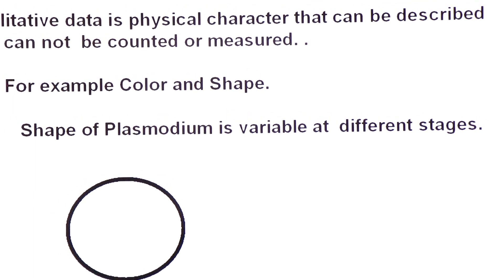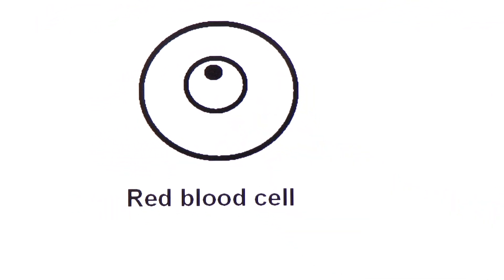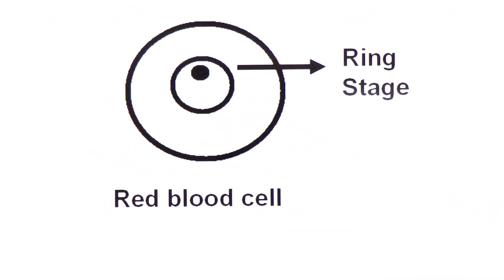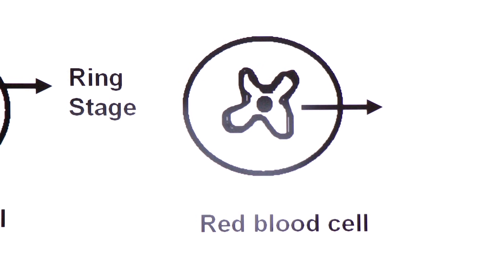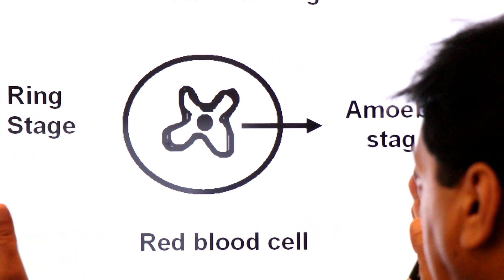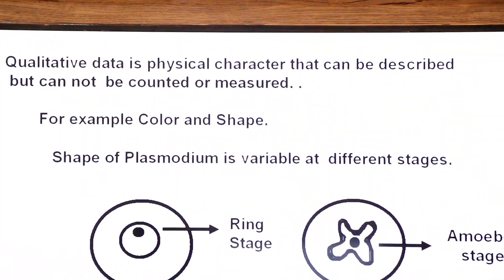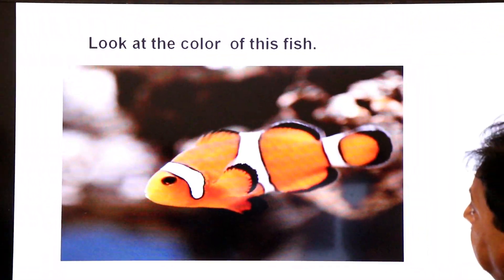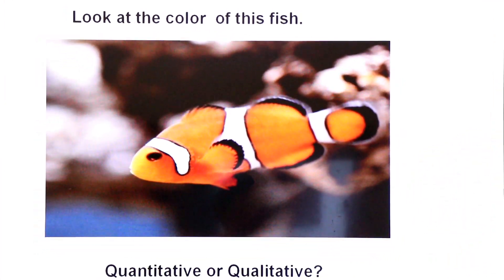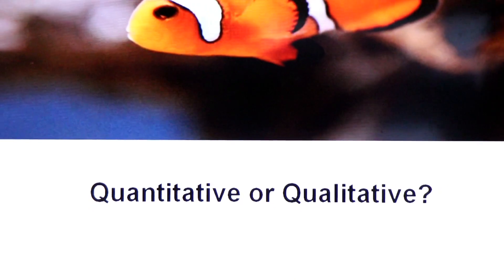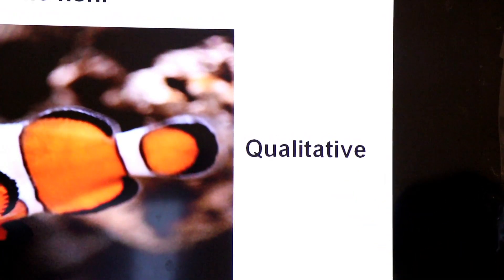The shape of plasmodium — whether ring stage or amoeboid stage — is qualitative data. Similarly, the color of a fish can be described but not counted, making it qualitative data as well. We cannot express color as a number, which is why it is qualitative data.